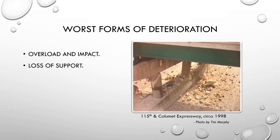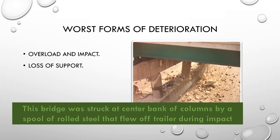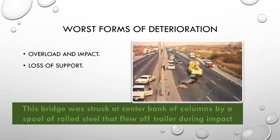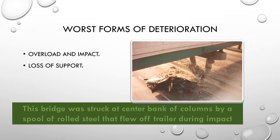The worst types of deterioration are cataclysmic overloads and impacts, and loss of support. This is a bridge in Chicagoland that was hit by a truck carrying a spool of steel that came undone, rolled over the truck driver and killed him, ran into the columns and blew them apart, then continued to roll down the highway — rolling over a car and killing everyone in it. Amazingly, the bridge deck never collapsed. The columns were shattered but for some unknown reason the bridge pushed together and a hundred-foot span never collapsed. Ultimately the piers were replaced within two months, and about five yards of concrete on the superstructure and deck had to be removed and replaced. Otherwise it went back in service totally in two months.